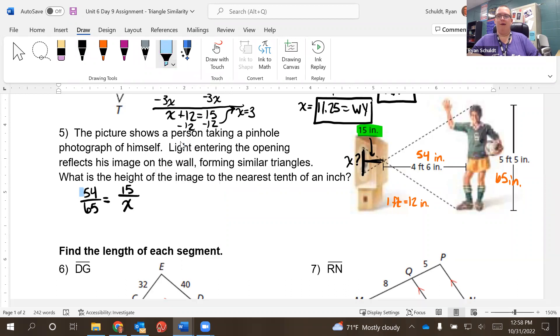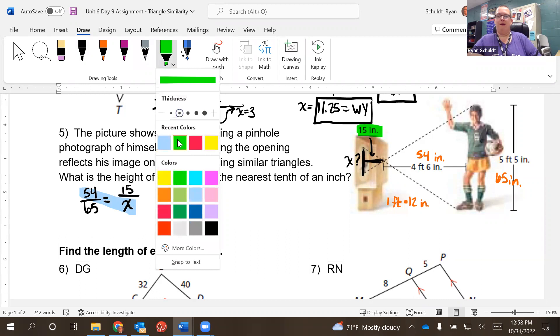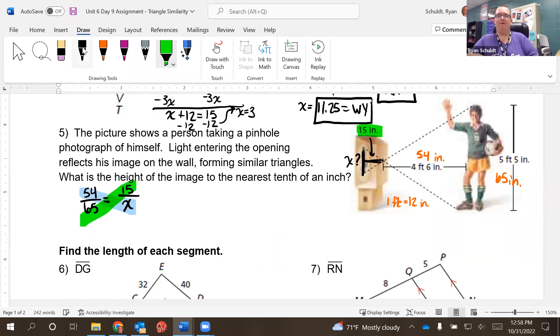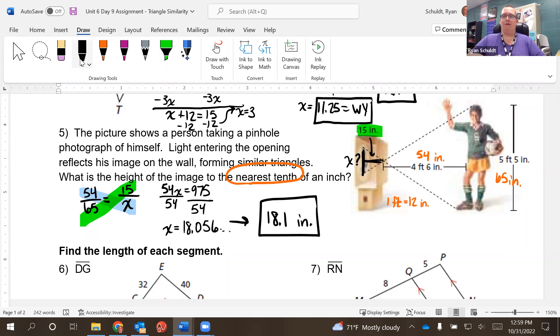And so now we cross multiply. 54 times X equals 15 times 65. It's going to be 54X equals. Let's see, 65 times 15, 975. Divide by 54, and we get X equals 18.056 and change. But it says round to the nearest tenth. So this becomes 18.1. There we go.